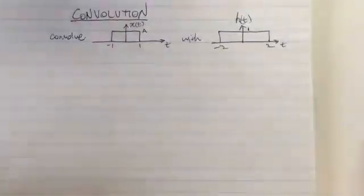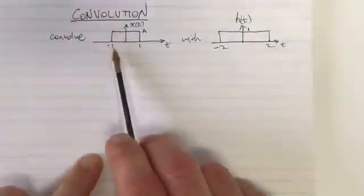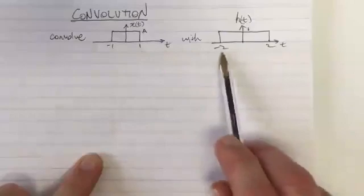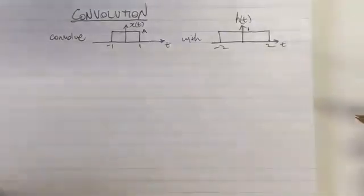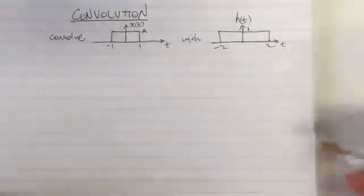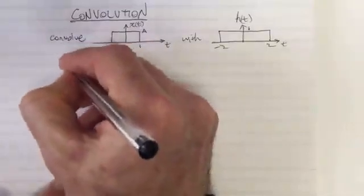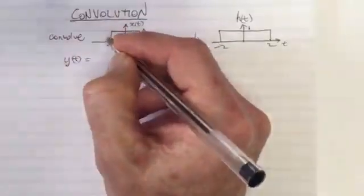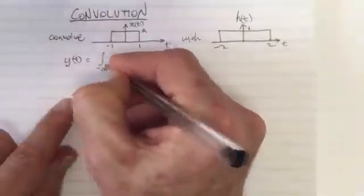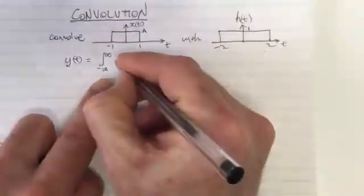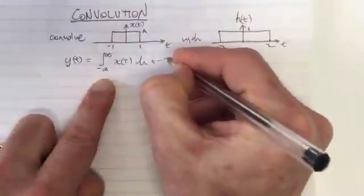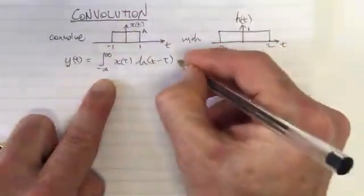We're going to solve this convolution problem. We've got two square functions, one from minus 1 to 1 in time, and the other from minus 2 to 2, and we want to convolve these. So we've got the formula for convolution: y(t) equals the integral from minus infinity to infinity of x(τ) times h(t minus τ) dτ.